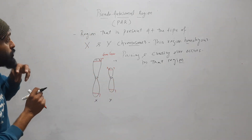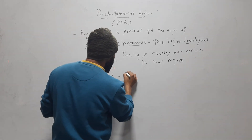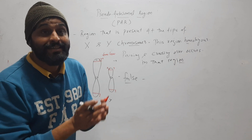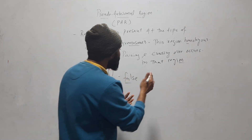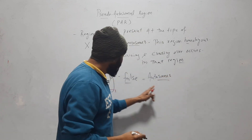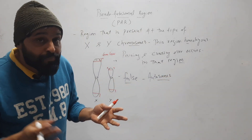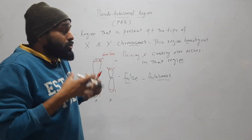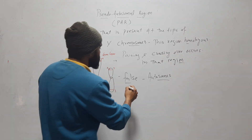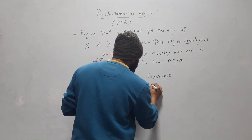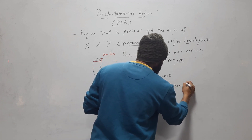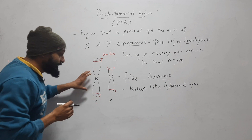Why is it named pseudo autosomal region? 'Pseudo' means false, and 'autosomal' means a region present on autosomes. But this region is present on sex chromosomes — on X and Y. So why are we calling it autosomal? Because it behaves like autosomal genes.